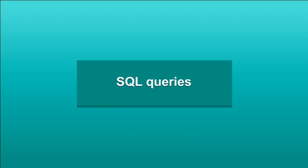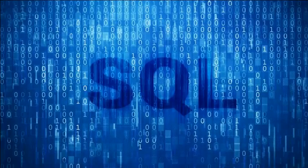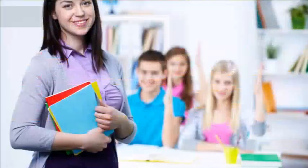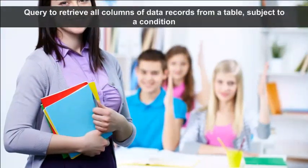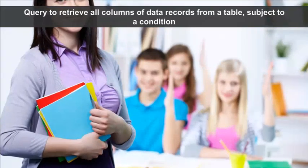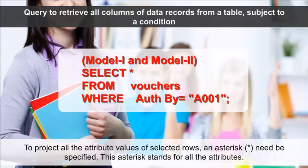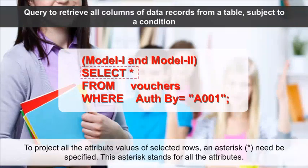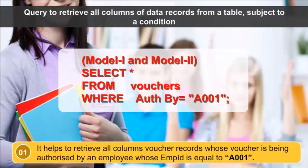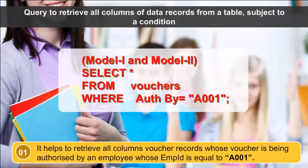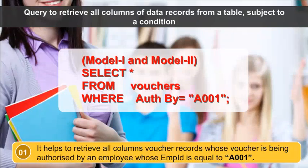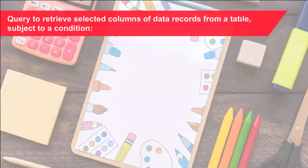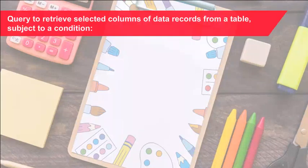SQL Queries — let us take the example of Model 1 and Model 2 to create the following queries. Query to retrieve all columns of data records from a table subject to a condition — to project all the attribute values of selected rows, an asterisk needs to be specified; this asterisk stands for all the attributes. It helps to retrieve all columns of voucher records whose voucher is being authorized by an employee whose employee ID is equal to A001.